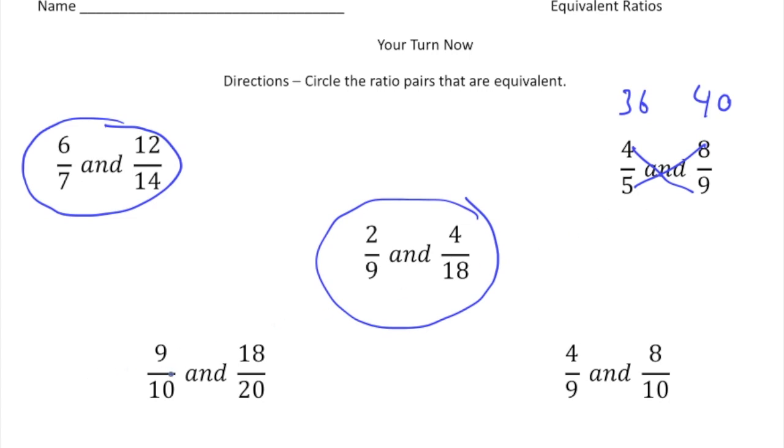Here we have nine tenths and eighteen twentieths. Well, again, nine times two is eighteen. Ten times two is twenty. So these are equal.